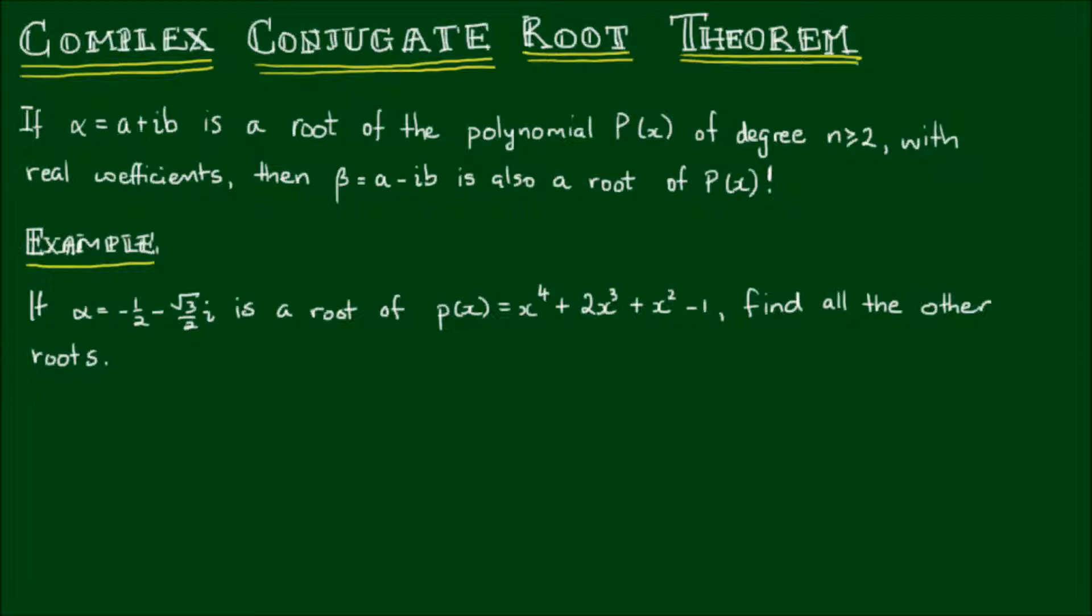Now, this is pretty much written in my own words. So for a more formal definition, you may want to look it up on Wikipedia, which I'll leave a link to in the description below. But it basically says if a complex number is a root or a zero of a polynomial, and it has to be at least a quadratic polynomial, then the complex conjugate is also a root of that polynomial. So with that said, let's do an example. If α = 1/2 - √3/2i is a root of P(x) = x⁴ + 2x³ + x² - 1, find all the other roots.